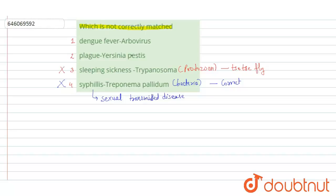The second option, plague and Yersinia pestis, is also correctly matched, because plague is caused by the bacteria Yersinia pestis. This bacteria is found in rats, so it is an infectious disease. This is also correctly matched and therefore also the wrong option.